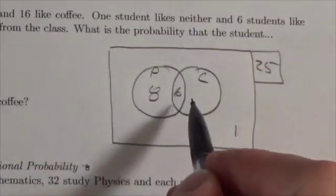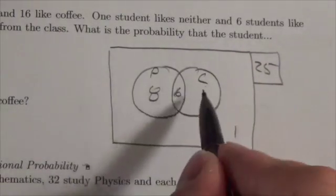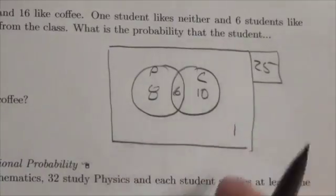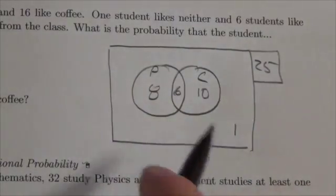For coffee, 16 like coffee. If there's 6 in the overlap, this is going to be 10. There we go. This is the distribution of the information.